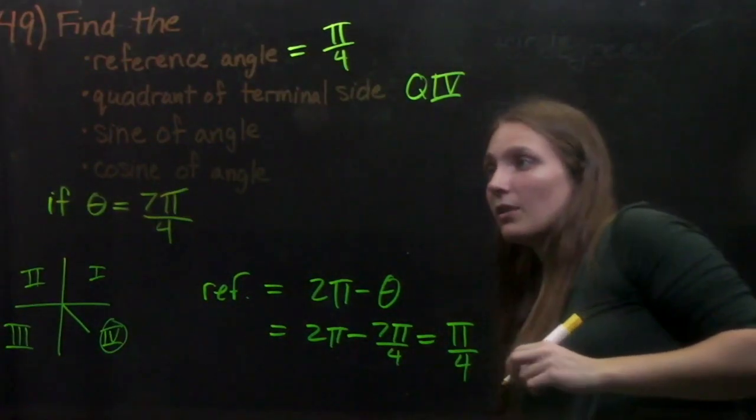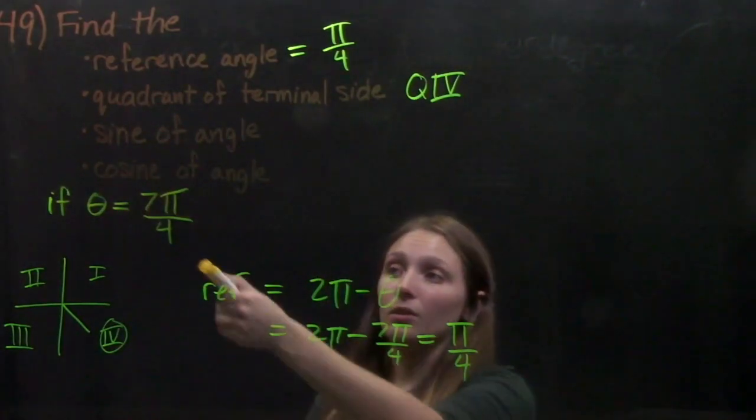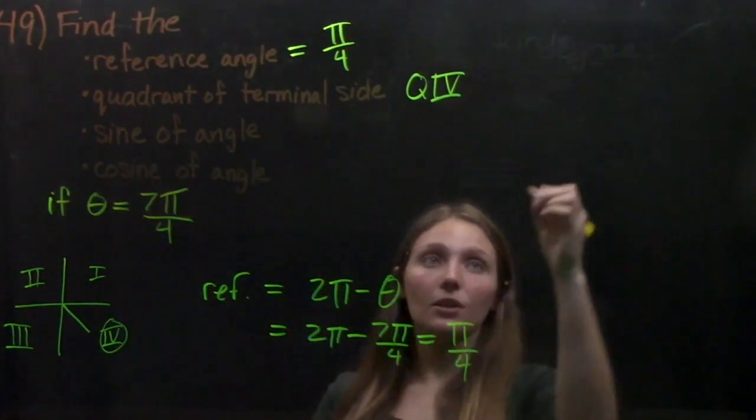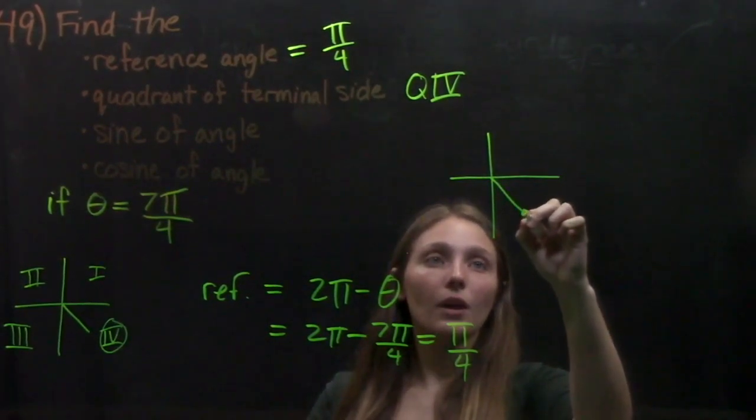Now, we're going to find the sine of the angle and the cosine of the angle. Well, we know this from the unit circle. Since 7 pi over 4 is on the unit circle, let me draw it again.